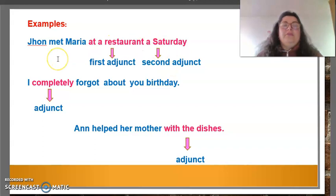The next example: I completely forgot about your birthday. In this case, the adjunct is the word completely. And without this word, the sense of the sentence doesn't change.